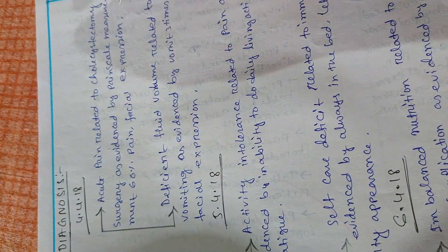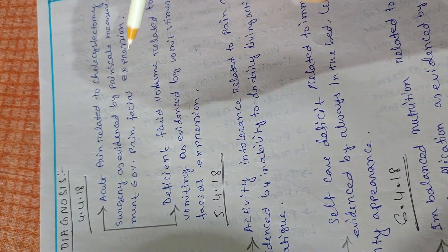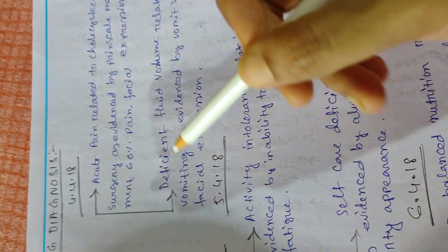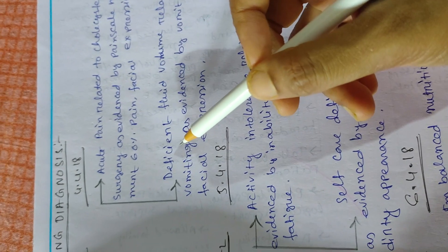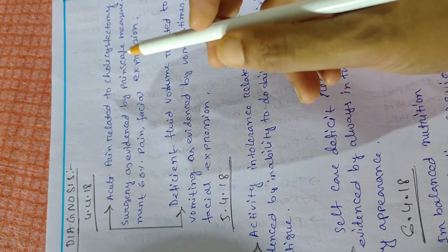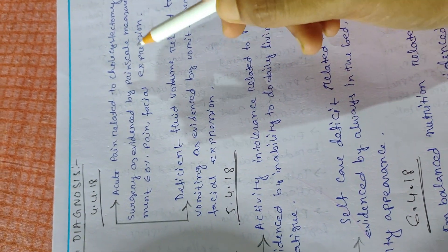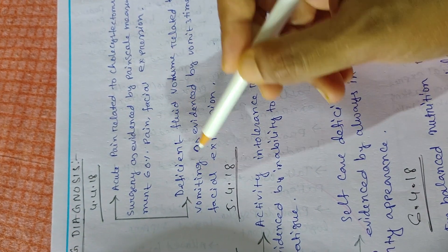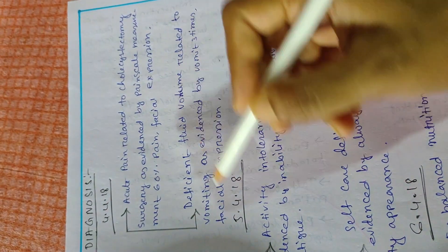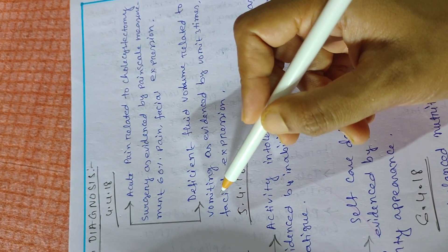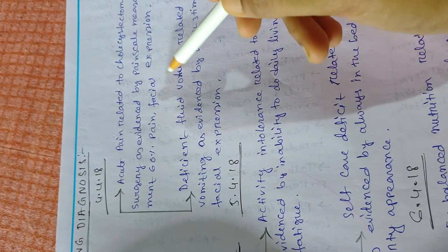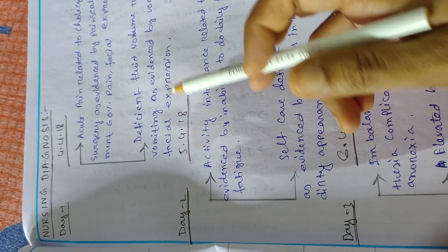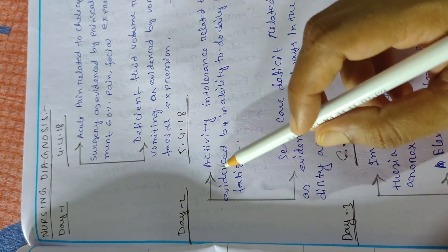Acute pain related to cholecystectomy as a surgical procedure, as evidenced by the patient's pain scale measurement and facial expression. The second nursing diagnosis can be deficient fluid volume related to the patient's vomiting, as evidenced by signs of dehydration.